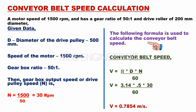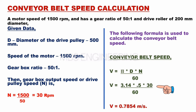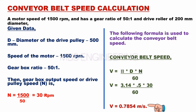To calculate the conveyor belt speed, we use the formula: V equals pi multiplied by D, multiplied by N, divided by 60. V equals 3.14 multiplied by 0.5, multiplied by 30, divided by 60. V equals 0.7854 meters per second. The conveyor belt speed is 0.7854 meters per second.